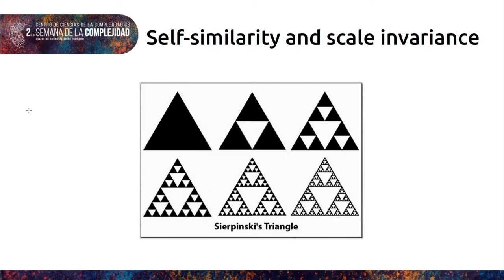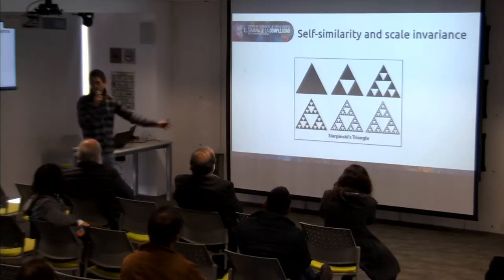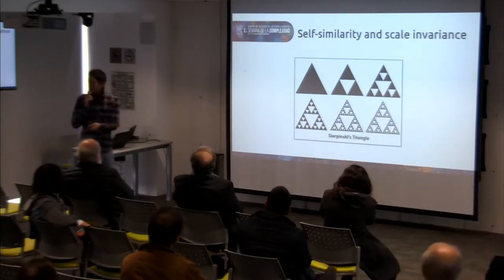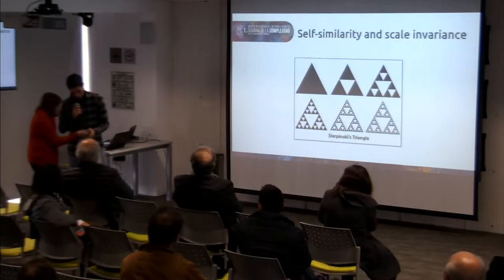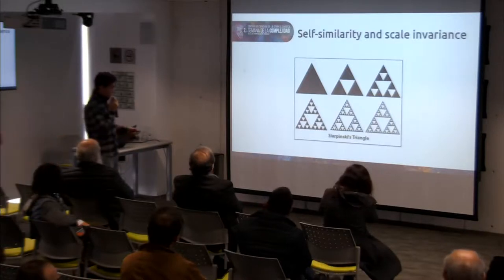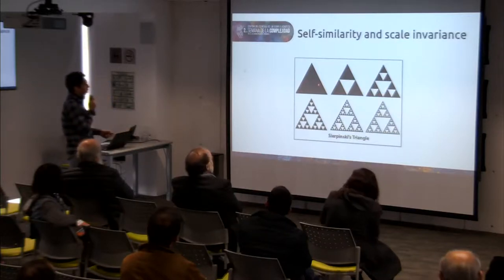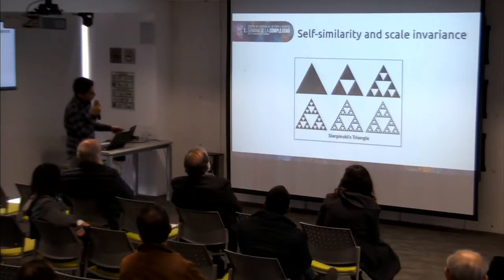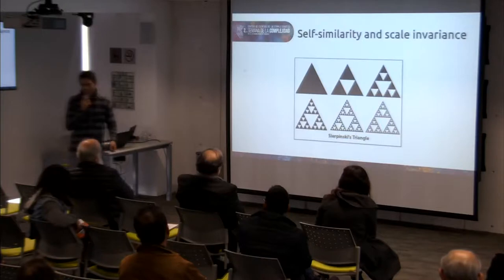So I want to talk first about self-similarity and scale invariance, and the best way to talk about this is to see fractals because they are beautiful. Do I have a pointer here? So some fractals are built in an iterative way. You can see here, for example, if in this triangle we draw inside the triangle another one and then go on for each of those, we have this very peculiar geometric figure.